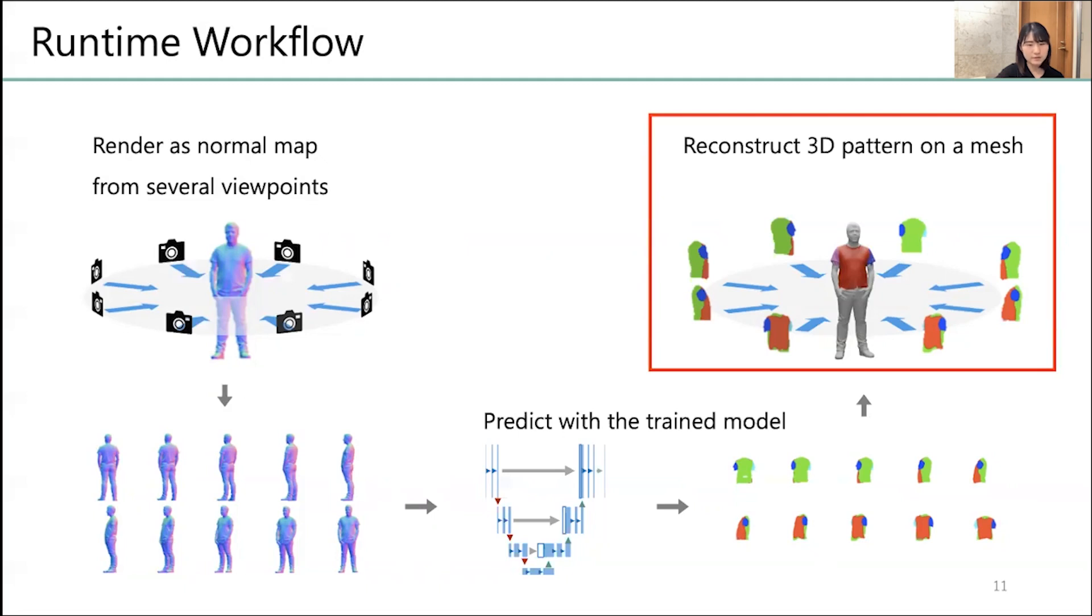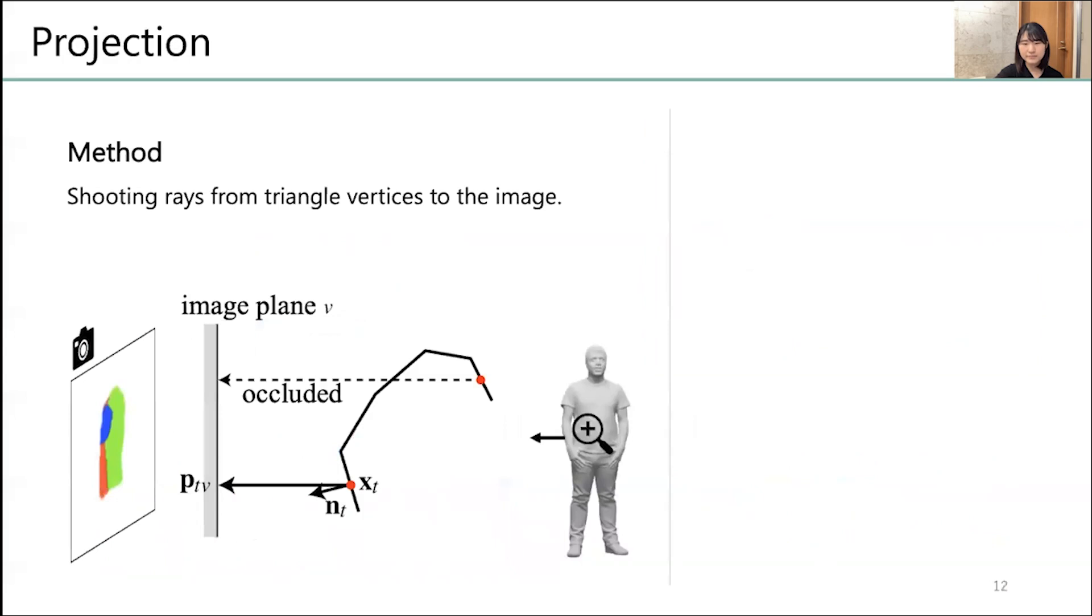To reconstruct a 3D pattern from multi-view 2D images, we took following two steps. The first step is projection. In this step, we should raise from triangle vertices to the image to get corresponding pattern information for the mesh. Since the accuracy of the prediction depends on the angle from which the triangle is viewed, we integrated the images from each direction by weighting the inner product of the ray and the normal direction of the triangle. Occluded triangle vertices are not included in the calculation.